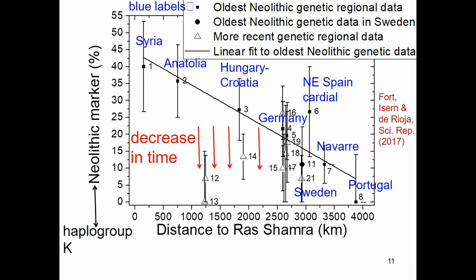Here we present the same data differently: the percentage of the Neolithic marker haplogroup K. For example, in Anatolia it is 43 percent, decreasing westward and northward through Hungary, Germany, northern France, and Portugal. The squares represent the oldest Neolithic data, and the regression line is the genetic cline.